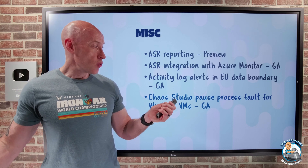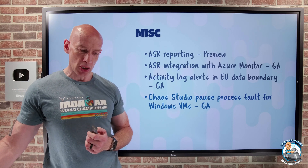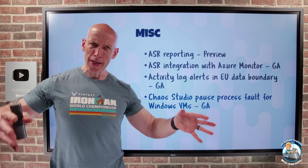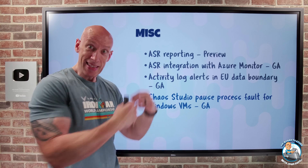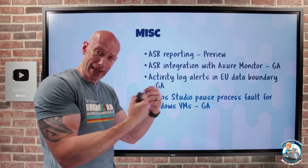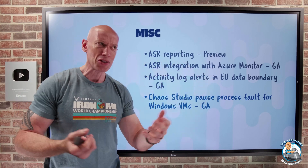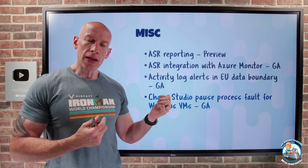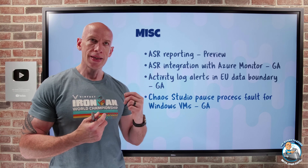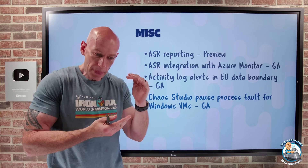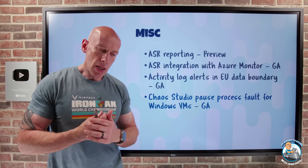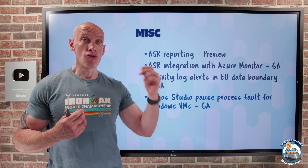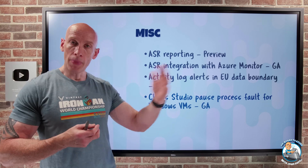Chaos Studio has a new pause process capability for Windows Virtual Machines — this is agent-based. Chaos Studio is all about creating experiments to introduce different types of failure, and it actually causes the failure, not just simulates it, so be careful in production. What it can now do is pause processes via the agent in Windows VMs for a certain period of time, helping ensure your detections are in place and that you're resilient to that as part of automated testing.